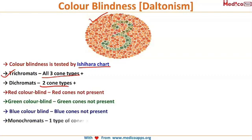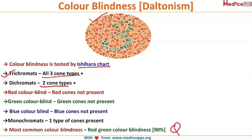Monochromats have only one type of cone. What is the most common type of color blindness? — this can be a question. 90% of people are red-green color blind, meaning they can only see hues of blue color and are blind to red and green.